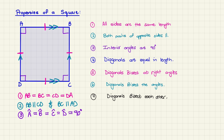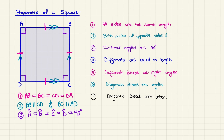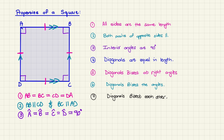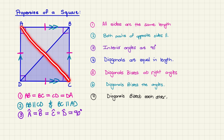The fourth property is that the diagonals are equal in length. A diagonal is a line that goes from one corner to another corner of the square. This property states that the line from A to C is equal to the line from B to D — we have two diagonals and these two diagonals are equal in length. Mathematically we write it as AC = BD.